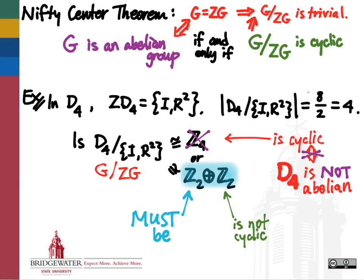The so-called nifty center theorem, otherwise known as the g mod z theorem, puts constraints on what we can get for a factor group if we quotient any group g by its center — the subgroup that consists of all the elements that commute with everything in the group. It says that the only way that quotient can be a cyclic group is if that quotient ends up being a trivial group because the original g is abelian.